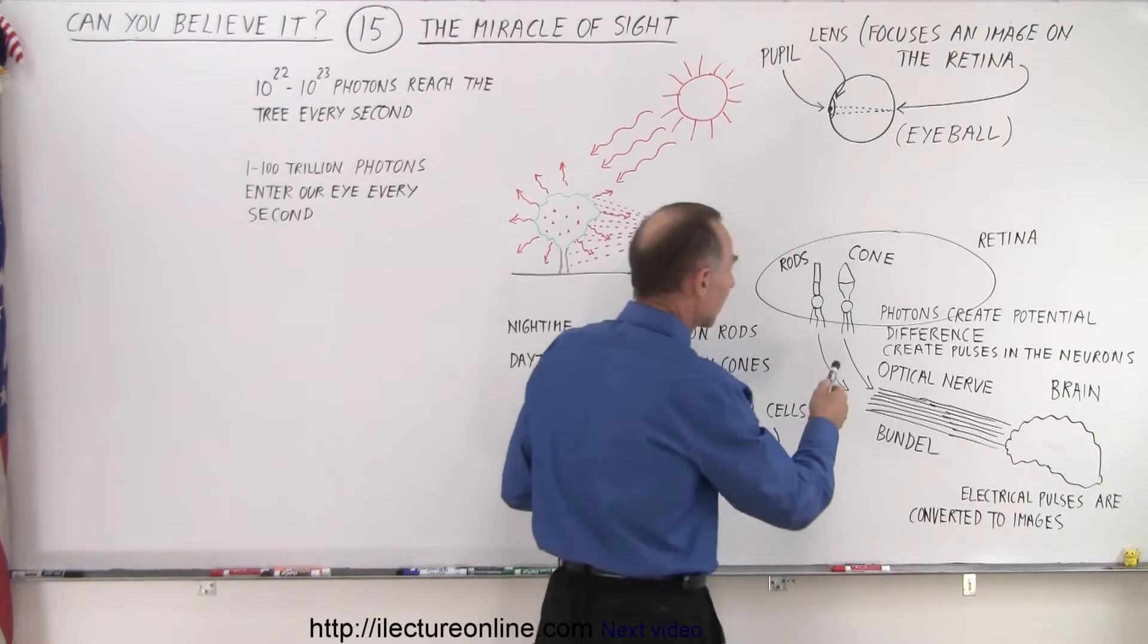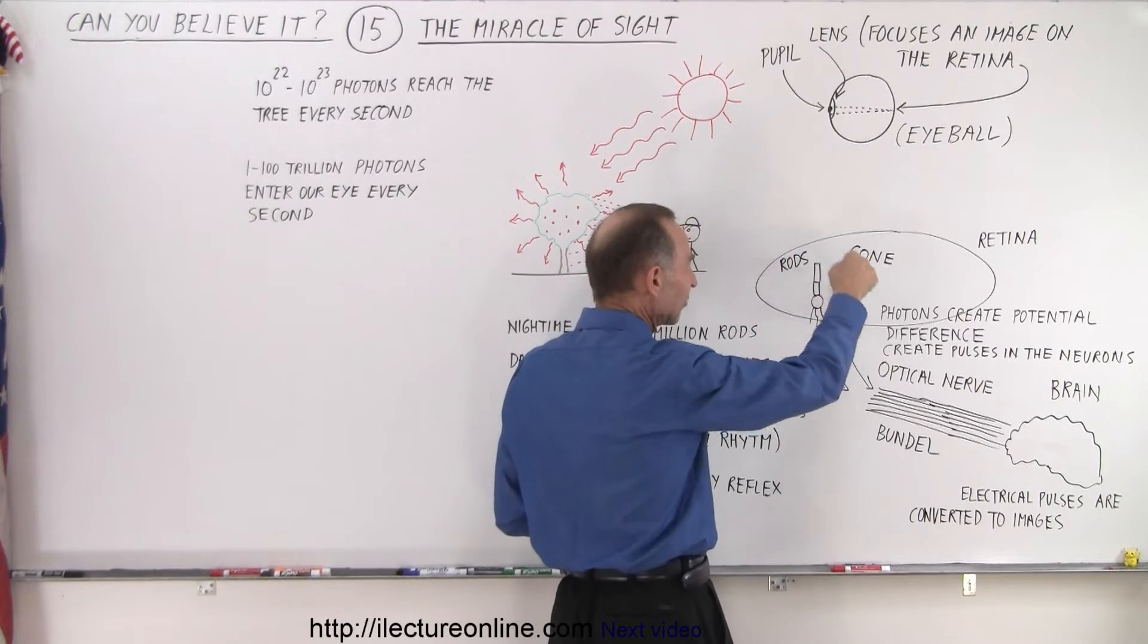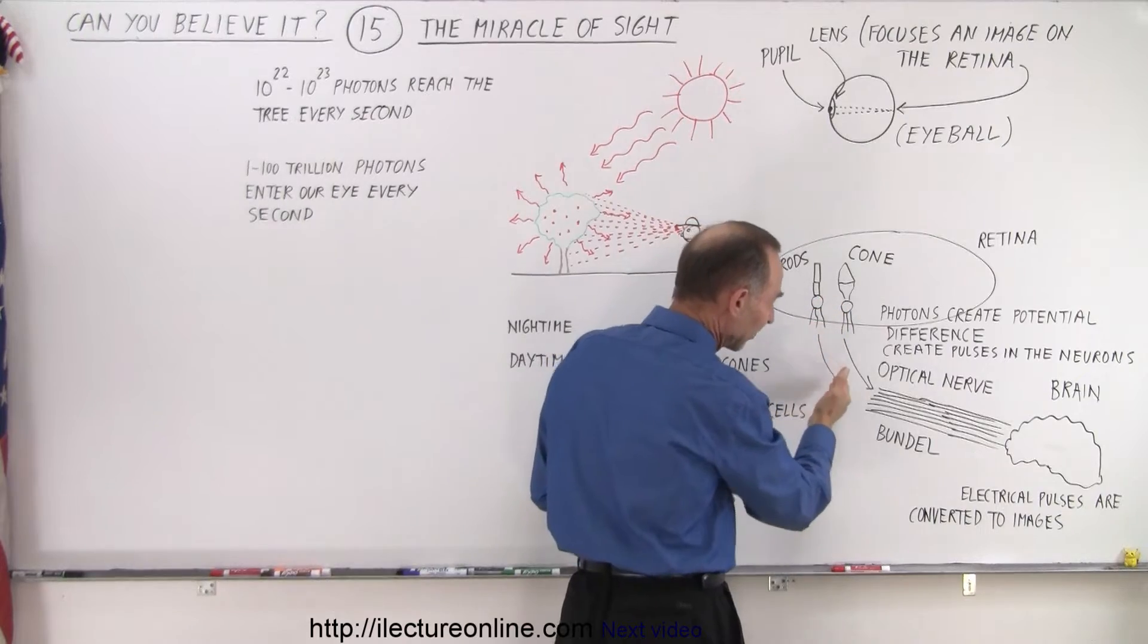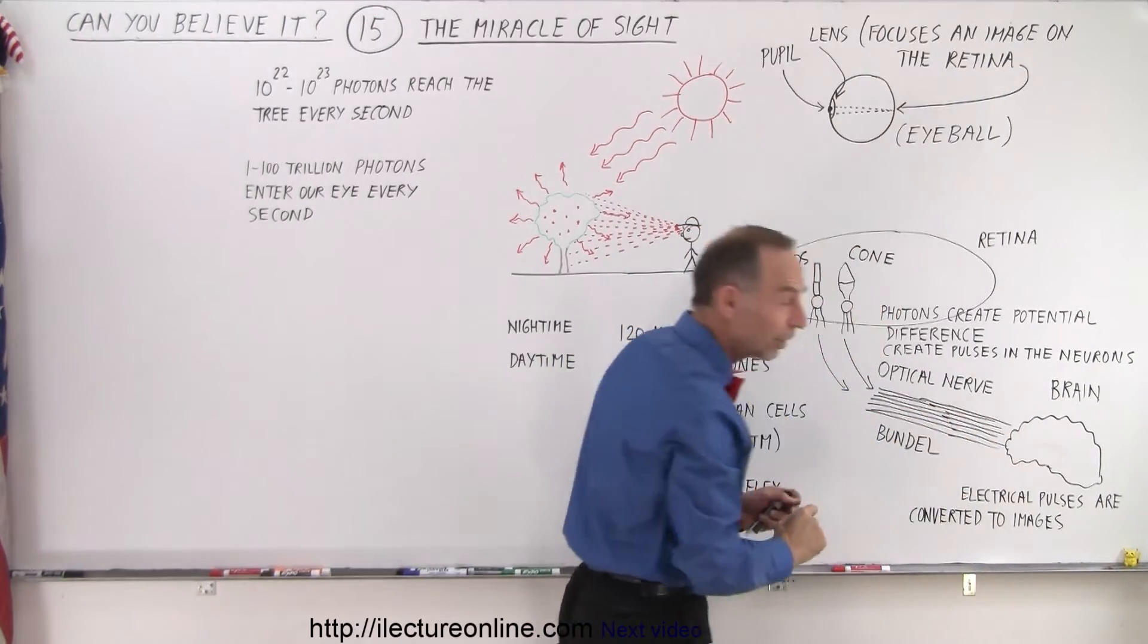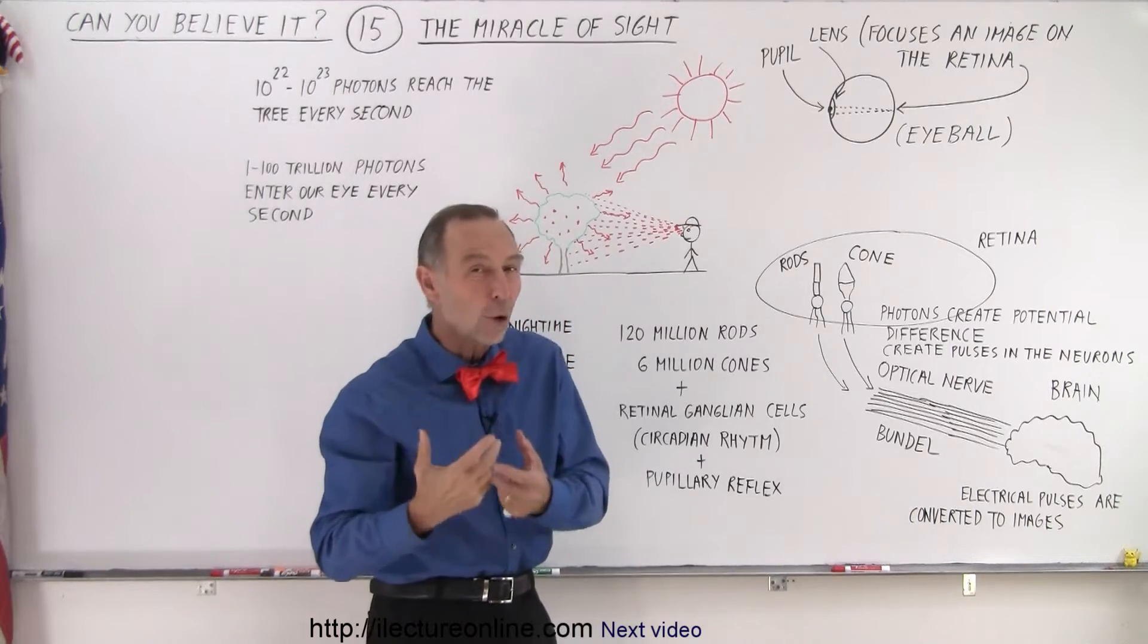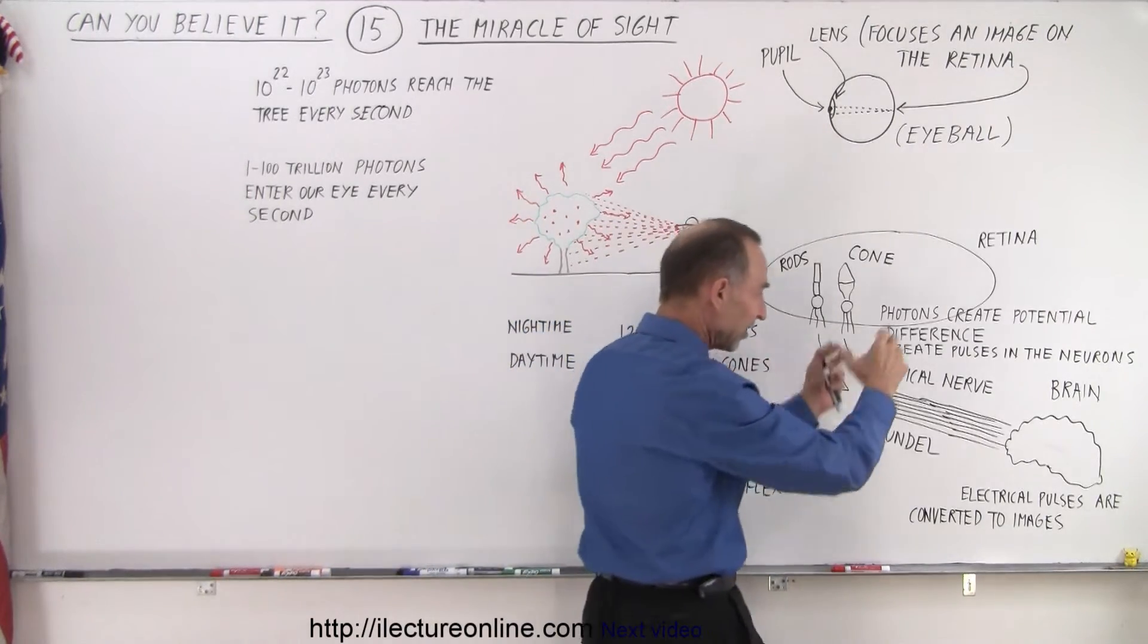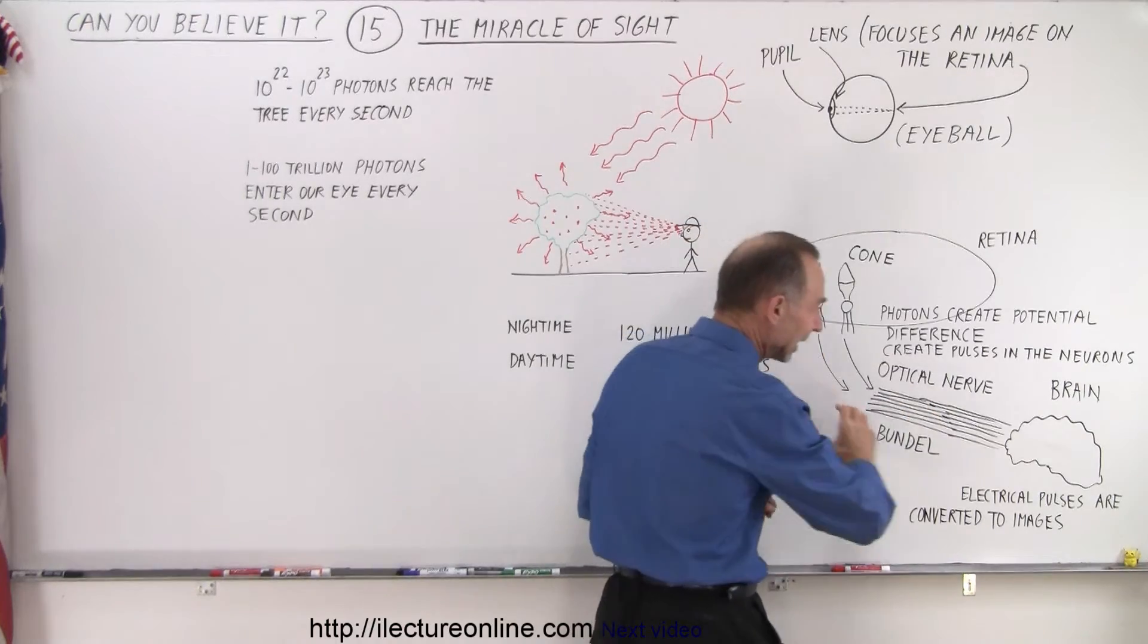These signals that we get from the rods and the cones then get fed into neurons. The neurons then send the signals through an optical nerve bundle. That bundle consists of over one million nerves, all bundled together, one bundle from each eye, then into the brain.